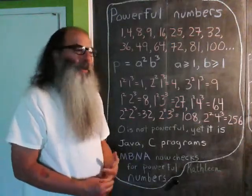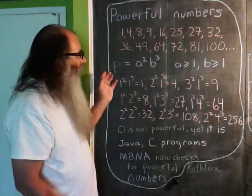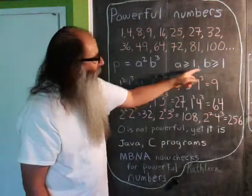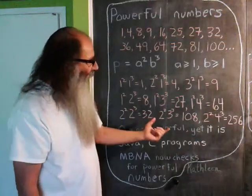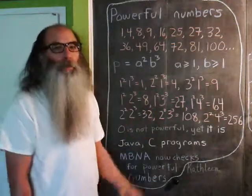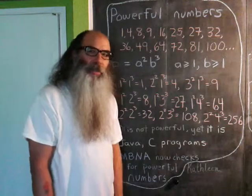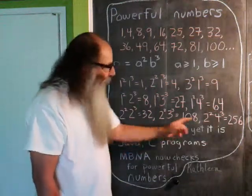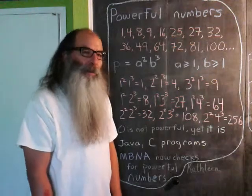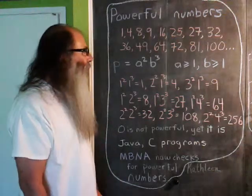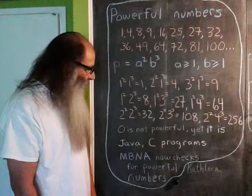I find it a little bit interesting that zero, because we have to start a and b at 1, zero is not considered a powerful number, at least in this integer sequence. Yet we know damn well that zero is an extraordinarily powerful number, so I found that to be a little strange.